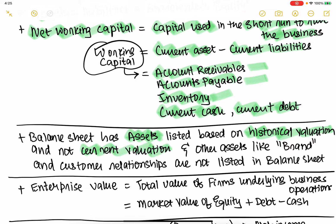If you have property, plant, and equipment that the company bought a long time ago, the valuation would have increased, but accounting standards don't capture this. Accounting also doesn't capture the value of the brand or customer relationships. So a balance sheet, although it's a snapshot in time, has many drawbacks — that's the key learning from our accounting classes.